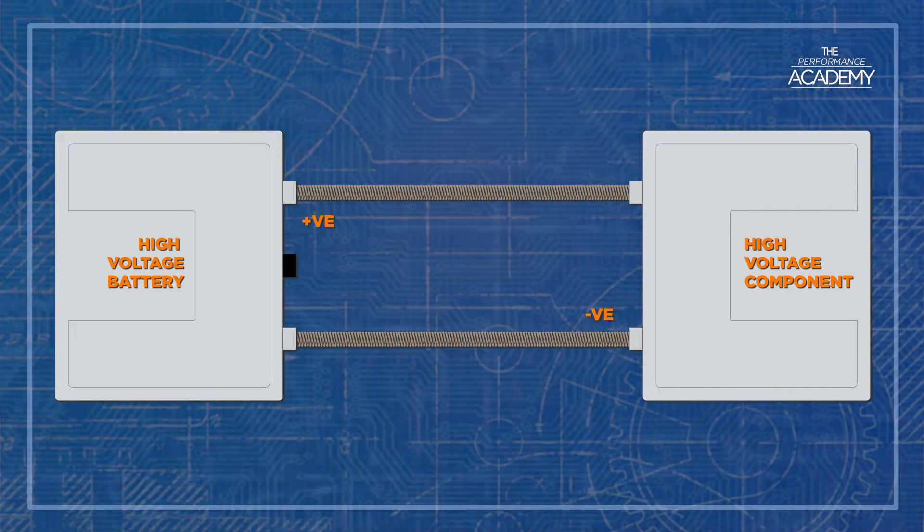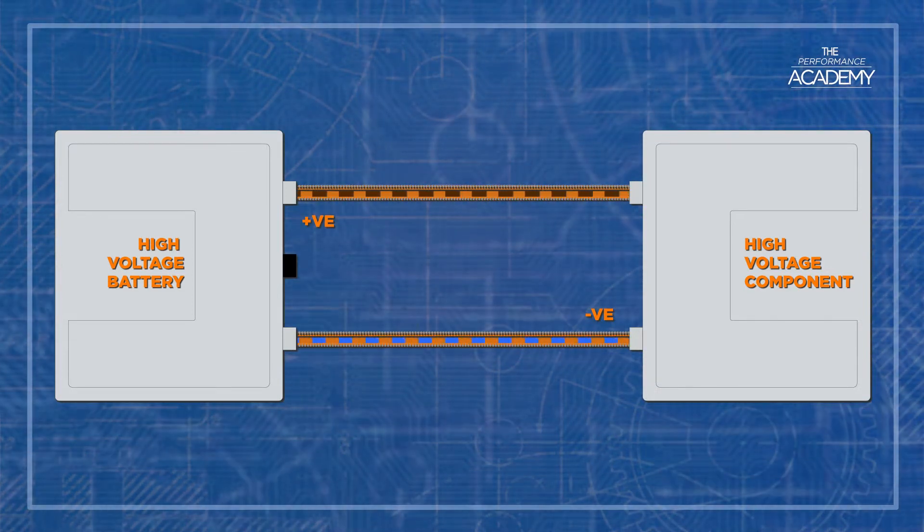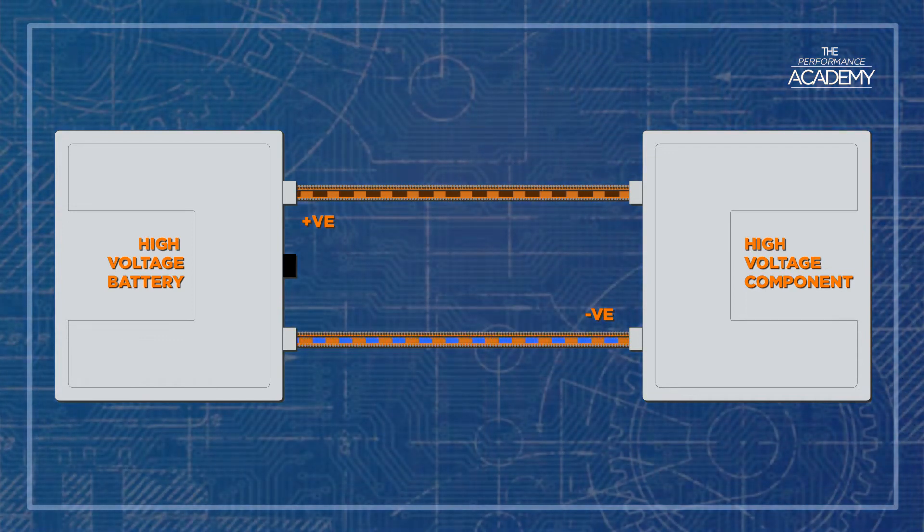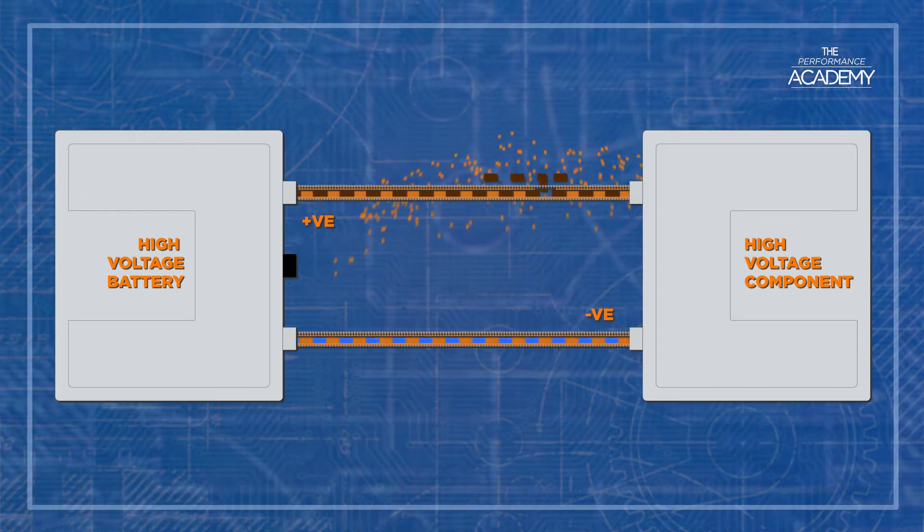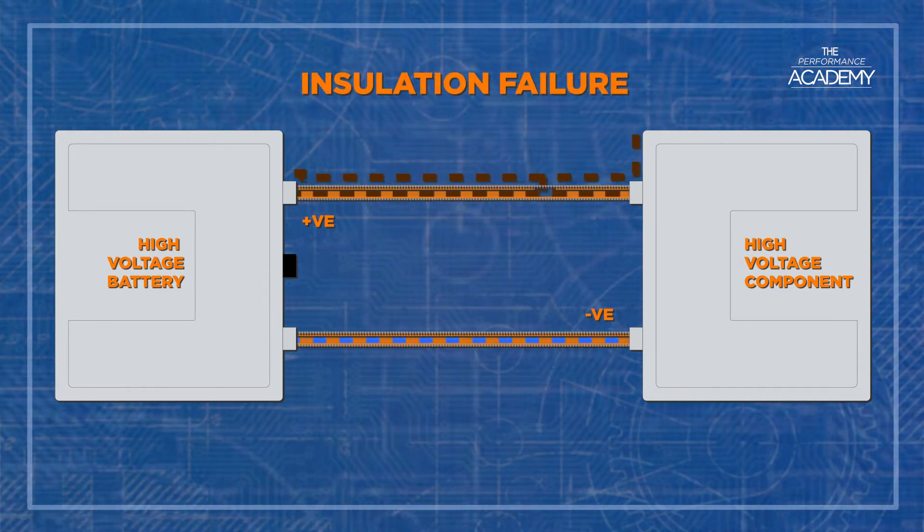The function of an insulation test then is to check that these two high voltage circuits are still insulated and shielded and not coming into electrical contact with any other part of the vehicle. To put it another way, the high voltage is not leaking out through the insulation into the rest of the vehicle.